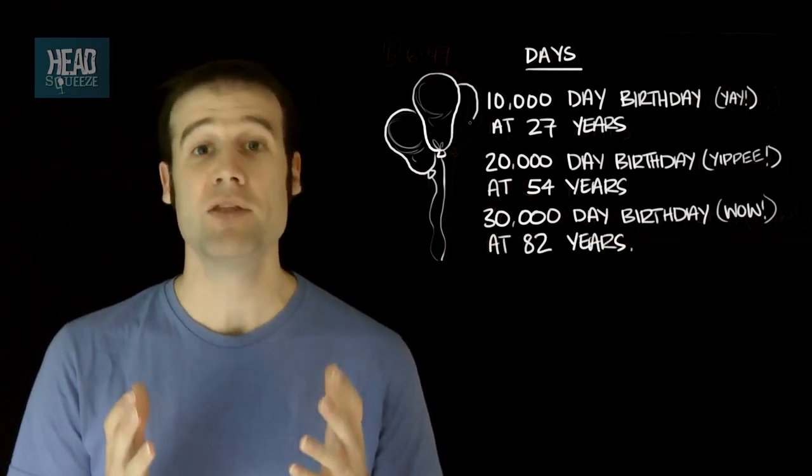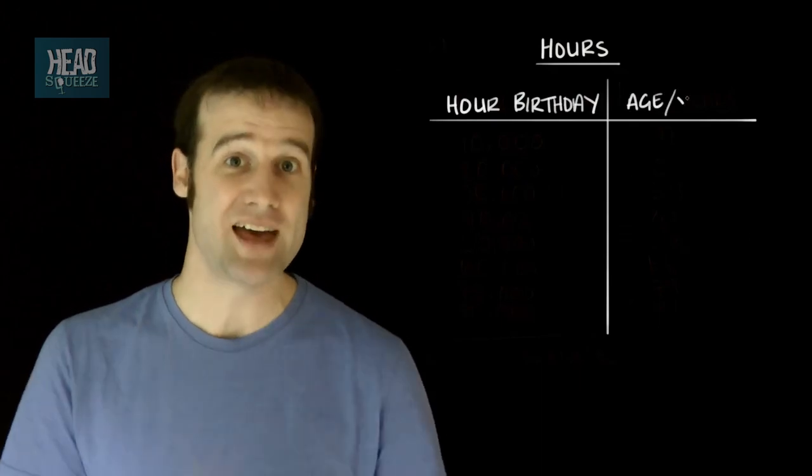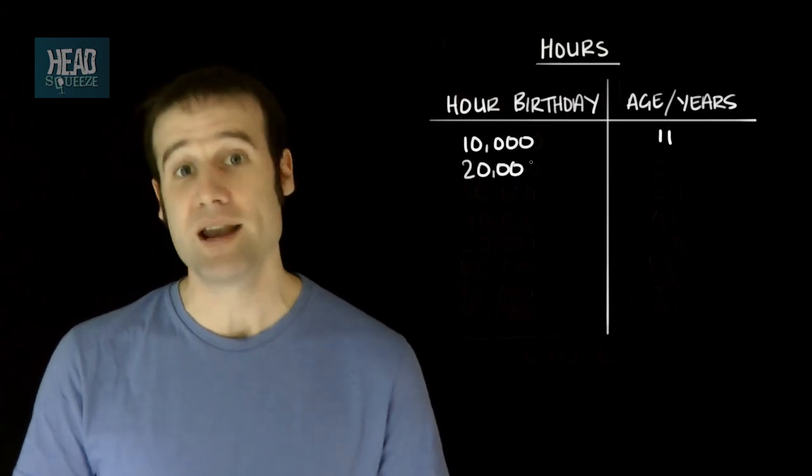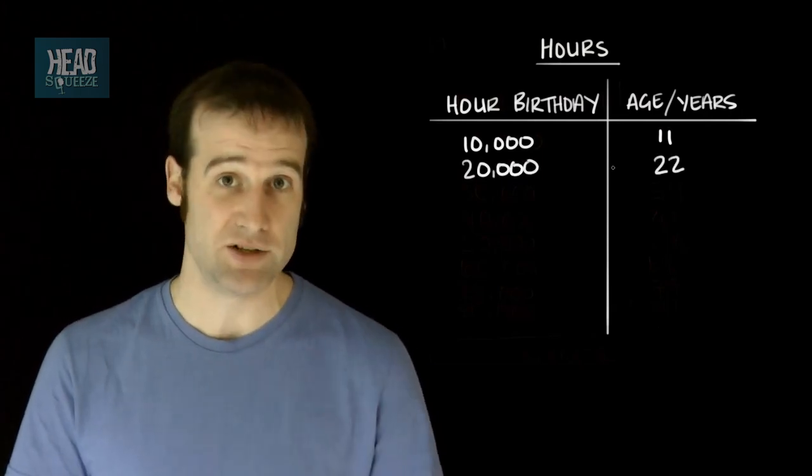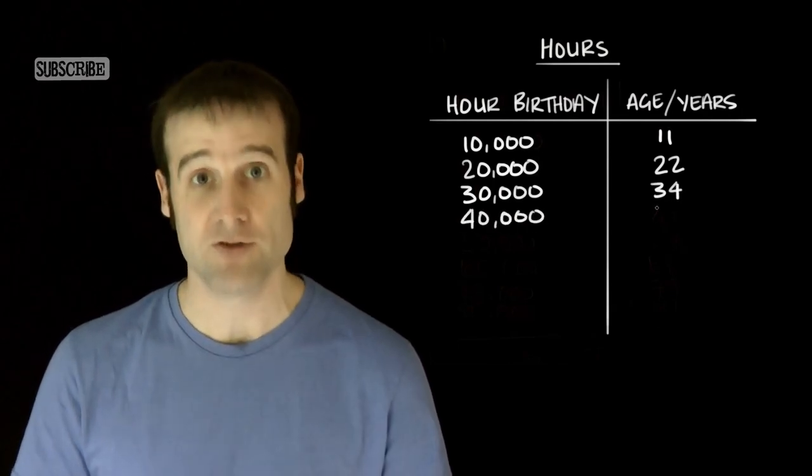Now beyond that, we're getting down to the realm of hours. You turn 10,000 hours when you're 11. Most of you have probably missed that. That's okay. Coming up, you might have 20,000 hours. That's when you're 22. 30,000 hours is when you're 34. 40,000 hours is when you're 45. 50,000 hours is when you're 57.